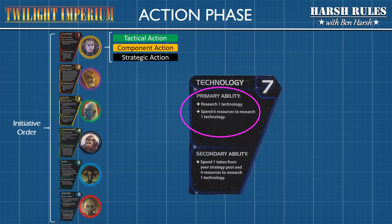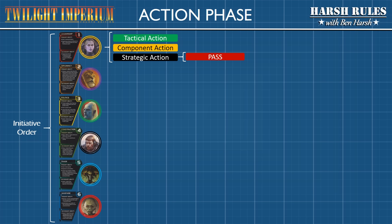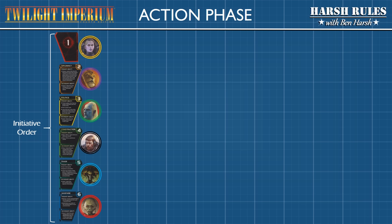The player may also choose a strategic action. When executing a strategic action, the player activates and resolves the ability on their strategy card. Once the player completes their strategic action, it unlocks the fourth choice: the player then has the option to pass and end their turn for the action phase. And when all players in the initiative order have passed, the action phase ends.